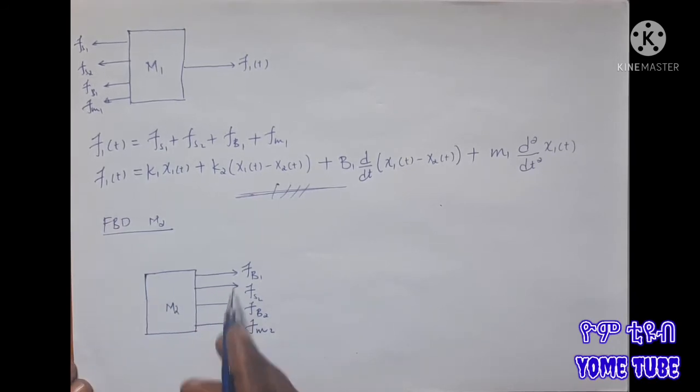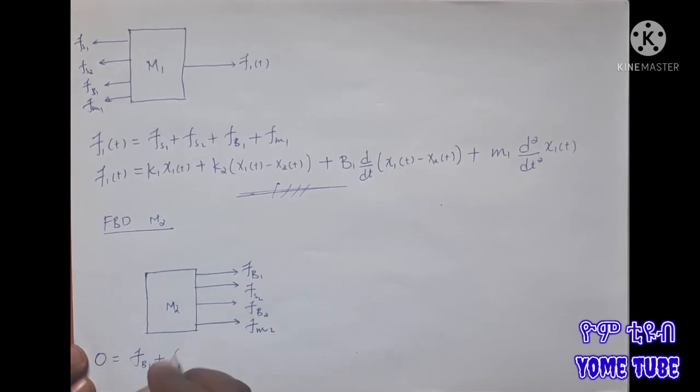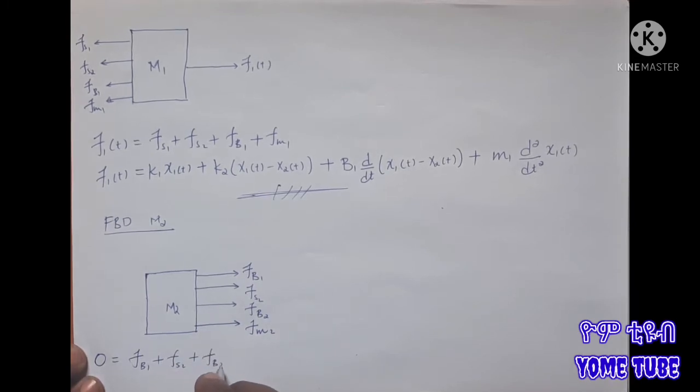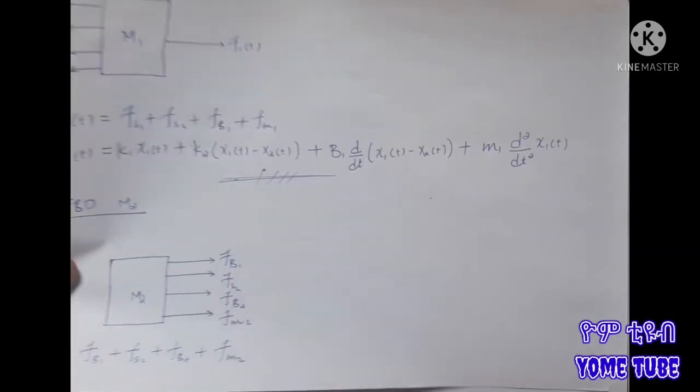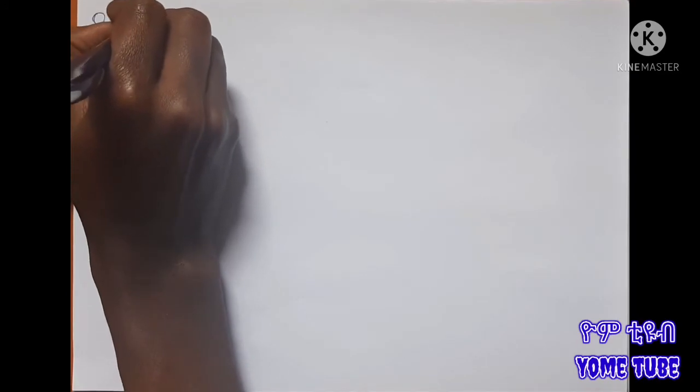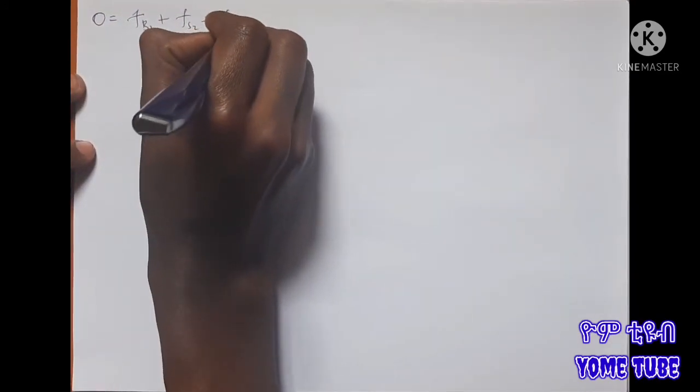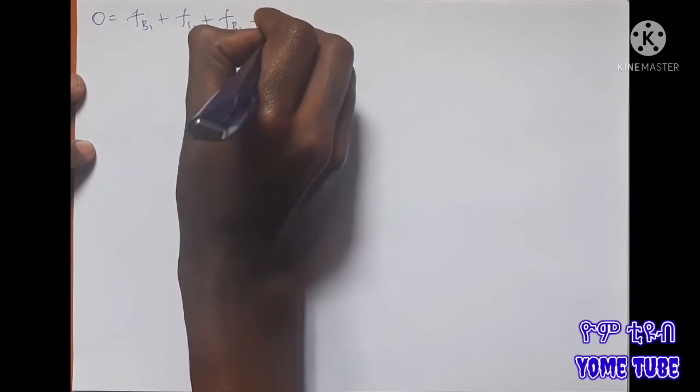The forces acting are: force due to damper one, force due to spring two, force due to damper two, and force due to mass two. Zero equals force due to damper one plus spring two plus damper two plus mass two.